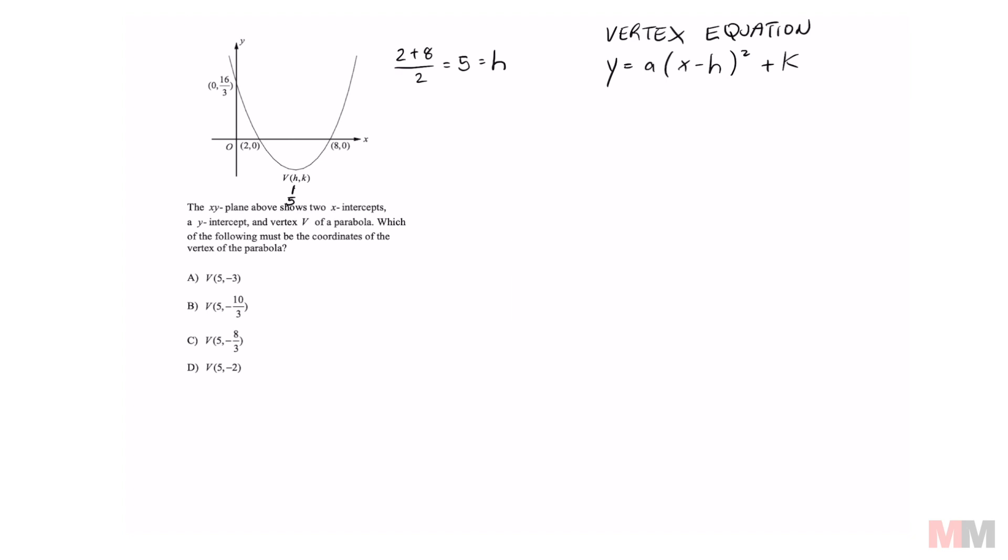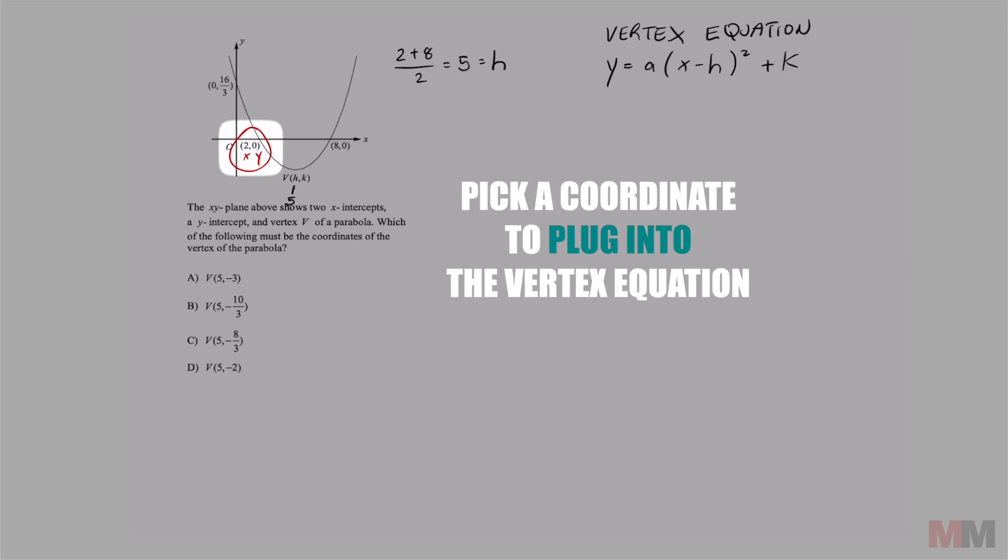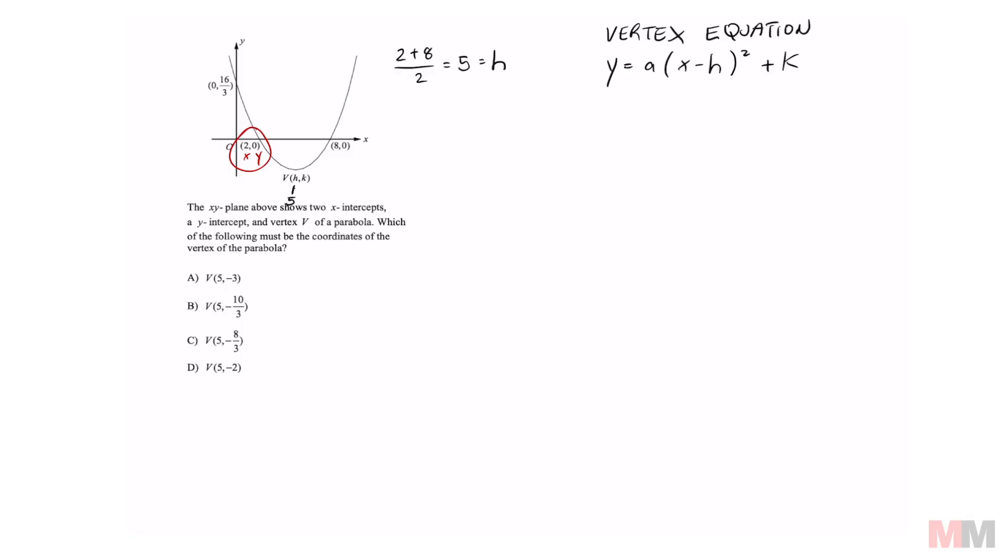Just start with one point. Let's pick x and y right here. We're going to start with that one and we're going to plug in the values that we know into the vertex equation right here. That gets us 0 equals a, we don't have an a value. Our x is going to be 2 minus 5 squared plus k, and I'm going to highlight where the numbers came from.